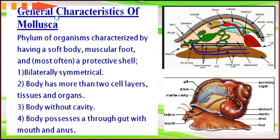Now we will discuss the general characteristics of Phylum Mollusca. Mollusca is a phylum of organisms characterized by having a soft body, muscular foot, and most often a protective shell. The first characteristic is bilateral symmetry. The body has more than two cell layers, tissues, and organs. The body is without a cavity, and possesses a through gut with mouth and anus. You can see its complete internal anatomy here.